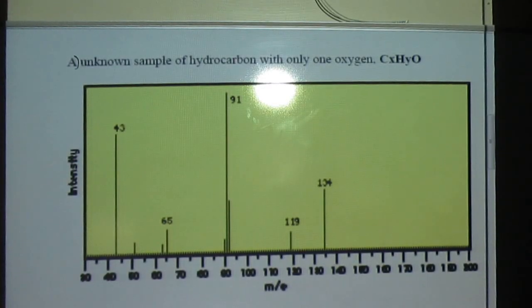Okay, so let's try this example A. It says unknown sample of hydrocarbon with only one oxygen, CxHyO. The first thing that these questions oftentimes ask is where are those two main peaks, the base peak and the parent ion? So let's go ahead and ask those particular questions.